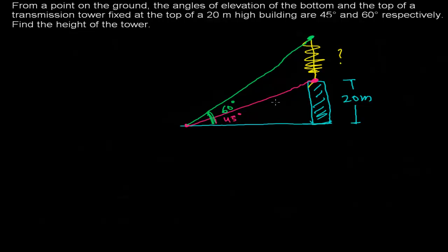There are two cases: first, we watched the bottom of this transmission tower and got a 45-degree angle of elevation — because lower the height, lower will be the angle of elevation. When we watched the top of the tower, the angle of elevation is greater: 60 degrees. Now we need to find out the height, and every time first you need to identify the right-angle triangles.